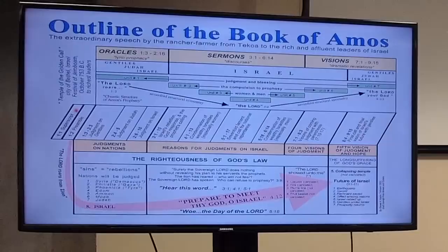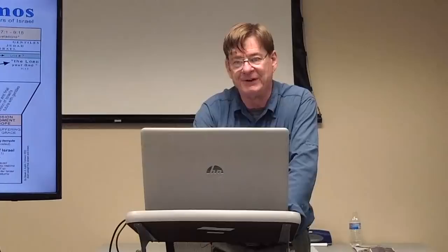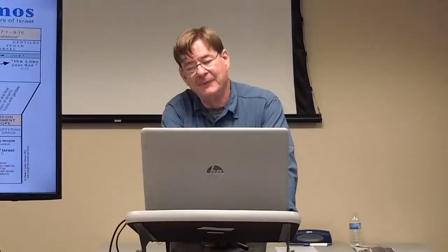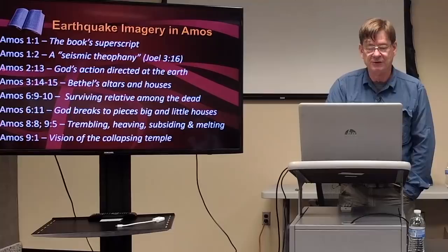The superscript says: 'In the days of Uzziah, king of Judah, during the days of Jeroboam, king of Israel, the vision of Amos of Teccoa, which he saw concerning Israel two years before the earthquake.' So the book of Amos is dated by the earthquake. Many Bible scholars understand Amos to contain a lot of earthquake imagery, and the book superscript itself describes the earthquake.